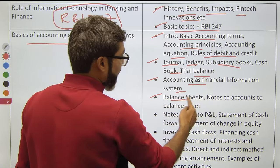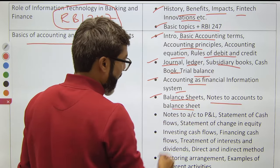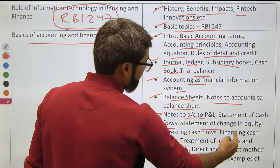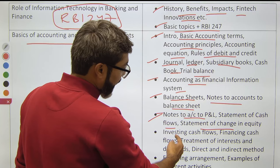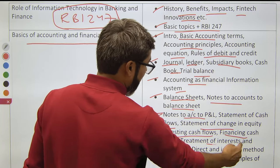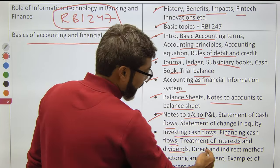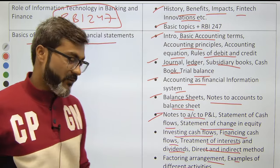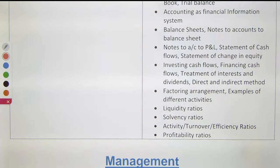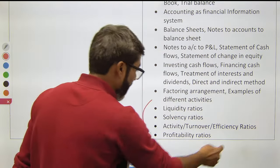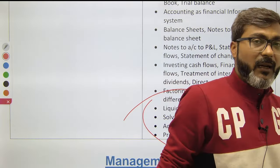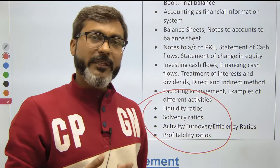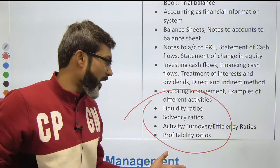Under accounting as a financial information system, study: balance sheets, notes to accounts, profit and loss statements, statement of cash flows, statement of changes in equity, investing cash flows, financing cash flows, treatment of interest and dividends, and direct and indirect methods with examples. Ratios are very important — a question from ratios is asked every single year, including in 2023.